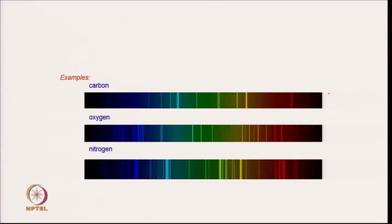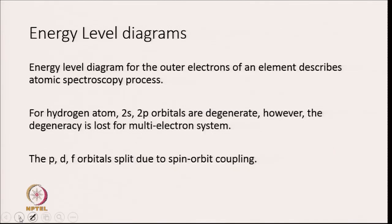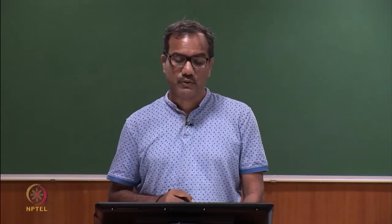Here are some other examples of atomic spectra. This is the atomic spectra of carbon, this is atomic spectra of oxygen, and this is atomic spectra of nitrogen. So each element has its characteristic atomic spectra, hence it is very easy to distinguish between different atoms using atomic spectroscopy.